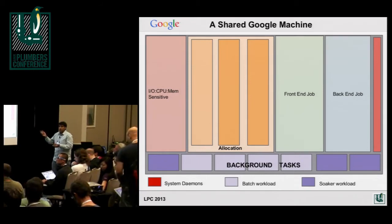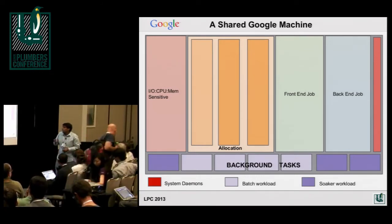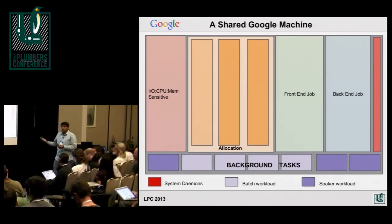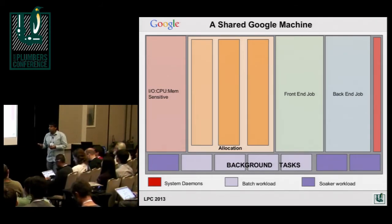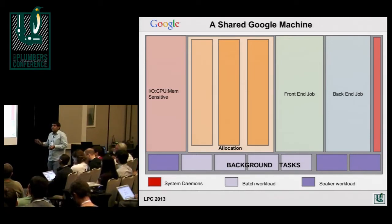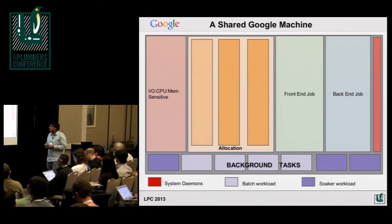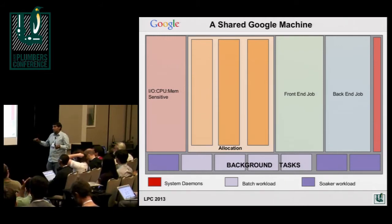Some jobs care about I/O a lot; other jobs just need CPU and memory. So we treat them differently. For all of these jobs when they run, we measure how much they're doing, what they asked for, and what they're using. Over time we try to reclaim resources they're not using, and that's where we fit in the jobs underneath — batch tasks that don't have strong guarantees. There are two different types: scavenger jobs that don't care at all even if starved, and jobs that have progress guarantees requiring some forward progress over a longer time window.